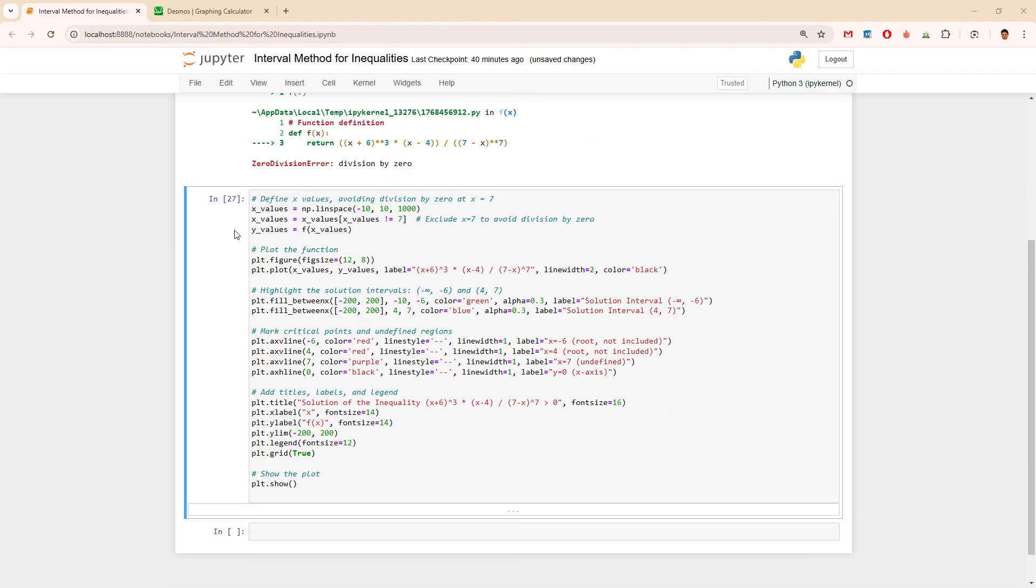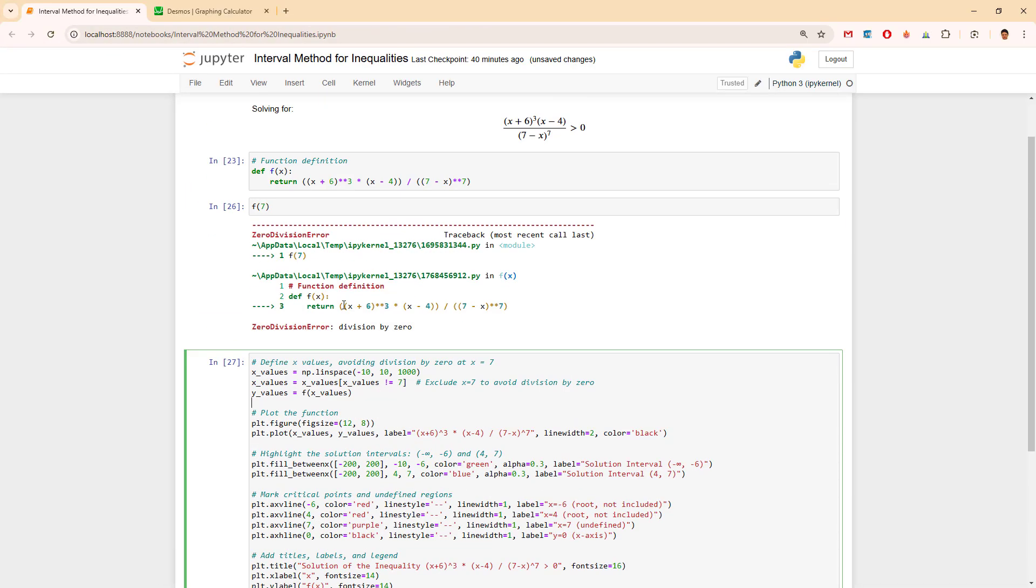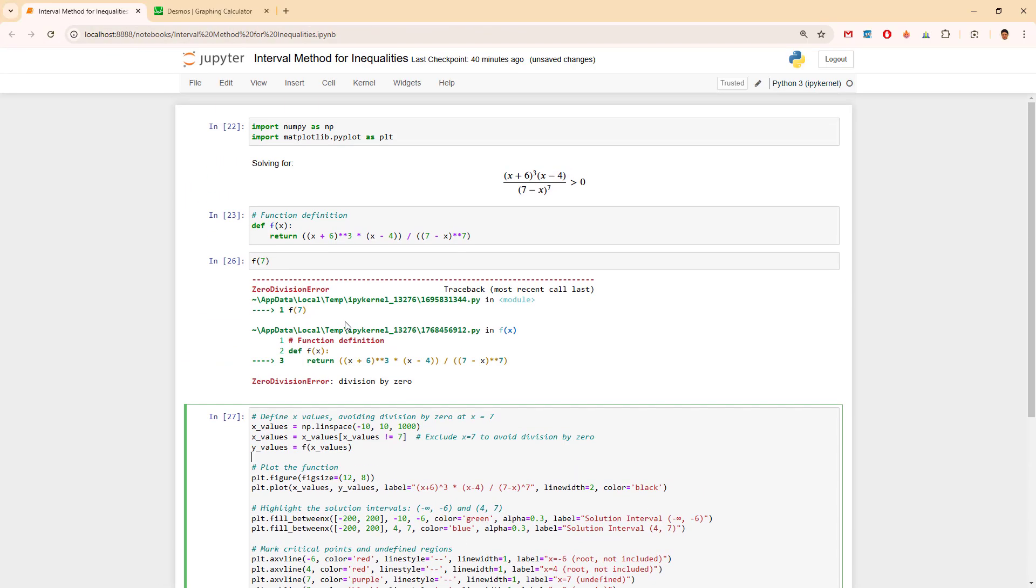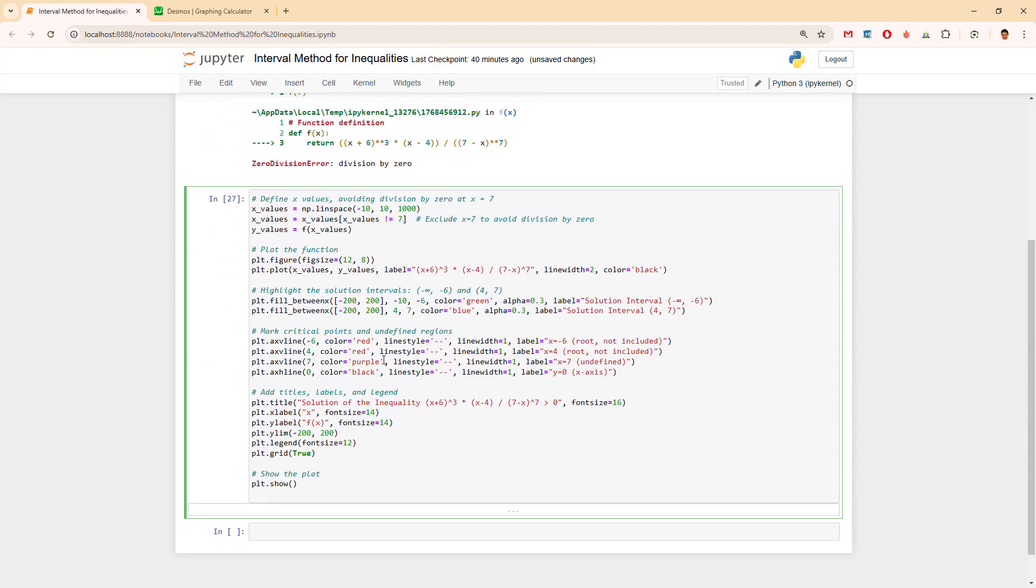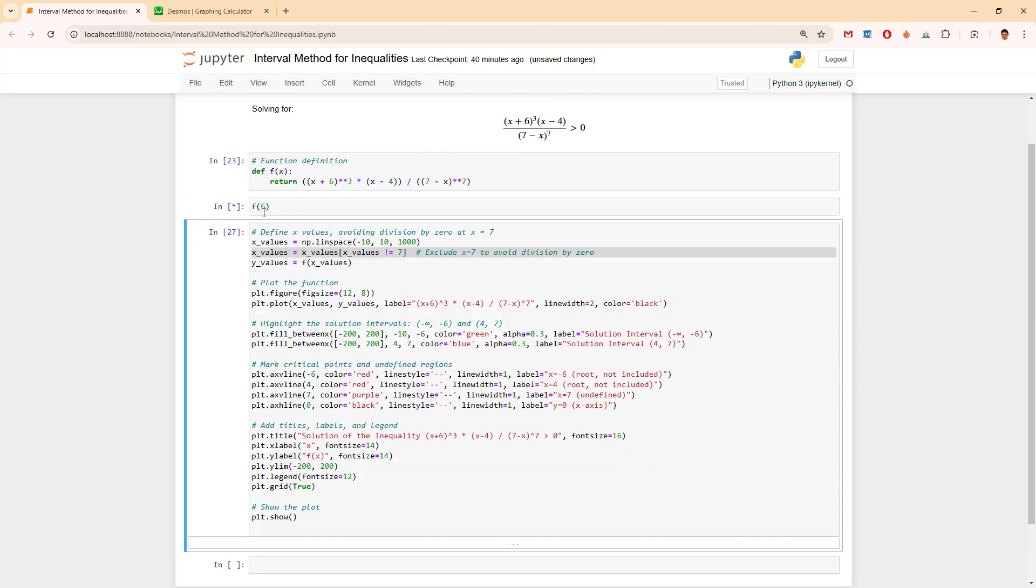Now let's take a look at the other part, the last part of the Jupyter Notebook exercise. And try to plot it. I have already written the code. Pretty much we have a lot of x values from minus 10 to 10, avoiding 7 because 7 is a division by 0. Automatically, as you can see here.